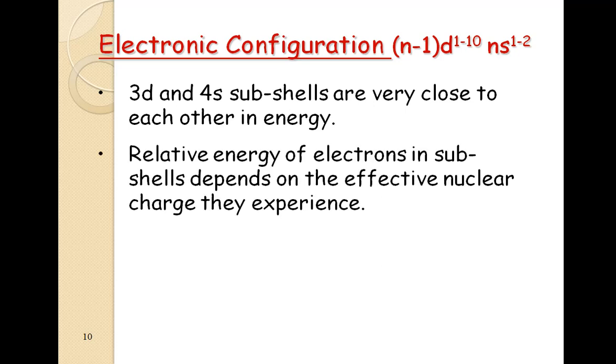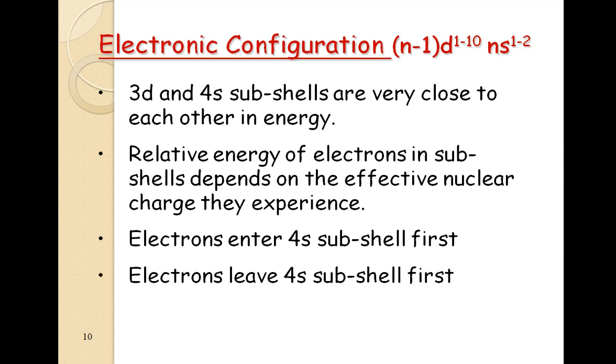If we talk about the first transition series, the 3d and 4s sub-shells are very close to each other in energy. Relative energies of the electrons in sub-shells depend upon effective nuclear charge they experience. You can interpret for the sake of simplicity that electrons enter 4s sub-shell first. If you are writing the electronic configuration of scandium, you write 4S2 3D1 means 4s is to be filled first. And when you are to write the configuration of any ion, remember electrons are to be removed from 4s first because 4s is the outer and 3d is the inner.